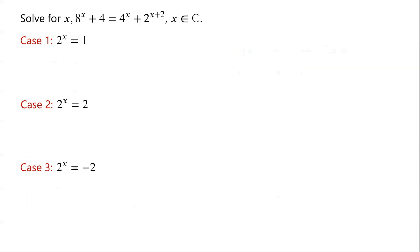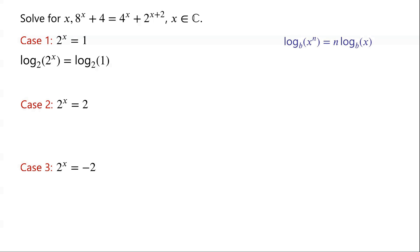For case 1, taking log to the base 2 of both sides of the equation, we have log base 2 of 2 to the power of x equals log base 2 of 1. Applying the rule that log base b of x to the power of n equals n times log base b of x, log base 2 of 2 to the power of x equals x times log base 2 of 2, which equals x times 1, which is x. Log base 2 of 1 is 0, so x equals 0.